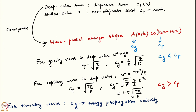Let us look at the dispersion relation once again in deep water. For pure gravity waves in deep water, the group velocity is exactly half of the phase velocity, as we have seen earlier. Let us do the same exercise for pure capillary waves in deep water. With a little bit of algebra, if you take omega squared equals T k cubed by rho, you can immediately see that the group velocity in this case is greater than the phase velocity. This has consequences for what we will observe when we travel along with the envelope.